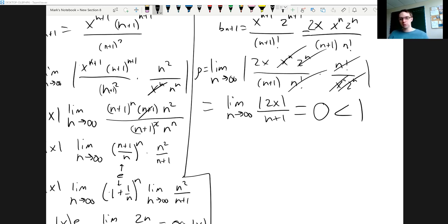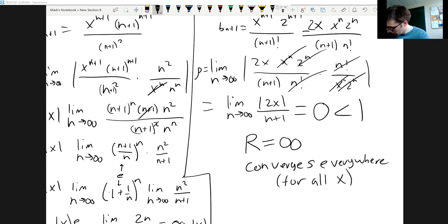And so notice that is always less than 1. What that means is this series always converges, it doesn't matter what value of x we choose, it's always going to converge. And so in this case we would say that the radius of convergence is infinite. It converges for all values of x. Okay, so we can have a radius of convergence that is zero if the series never converges except at the center point, or we can have a radius of convergence that is infinite if it converges for all values of x, it doesn't matter what x you plug in.